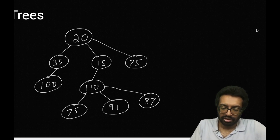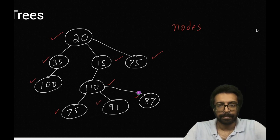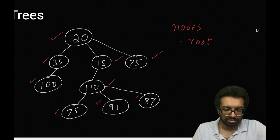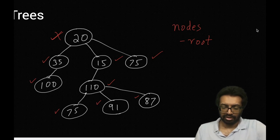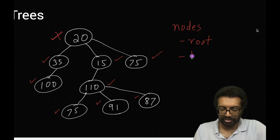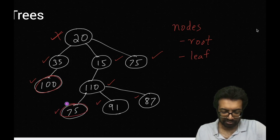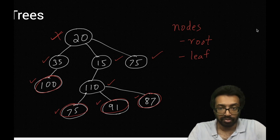These are all called as nodes. Each of these are called as nodes. And as we said, there is a special type of node which is the root node. There are other kinds of nodes. One type of node we will be interested in is the leaf nodes. These are the leaf nodes. Leaf nodes are nodes which do not have any children.